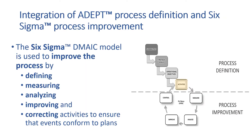In essence, we recognize each activity as one process. We use the SOAR model to define the plan activity — an activity we also call a process. Then we use Six Sigma to measure, analyze, improve, and correct the activities so that we can ensure that events conform to the plans that we've been given.